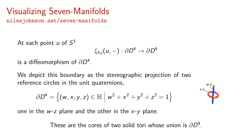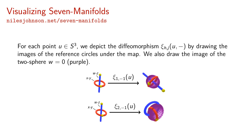We depict this boundary as the stereographic projection of two reference circles in the unit quaternions: one in the WZ plane and the other in the XY plane. These are the cores of two solid tori whose union is the four-ball boundary. For each point U in S3, we depict the diffeomorphism CHJ of U by drawing the image of the reference circles under the map. We also draw the image of the two-sphere given by W equals zero.